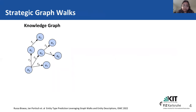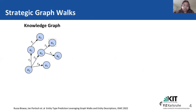To overcome this, in this work we leverage the contextual information of the entities by considering different strategic graph walks. Here we have a knowledge graph where the nodes E1, E2, E3 are the nodes of the graph, and the relations between them are given by directed edges R1, R2, R3, R4, and so on. We perform different strategic graph walks in this knowledge graph.